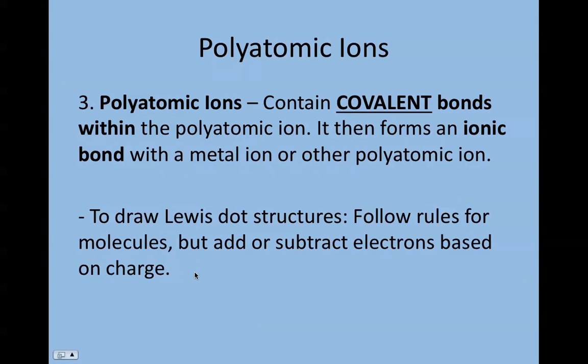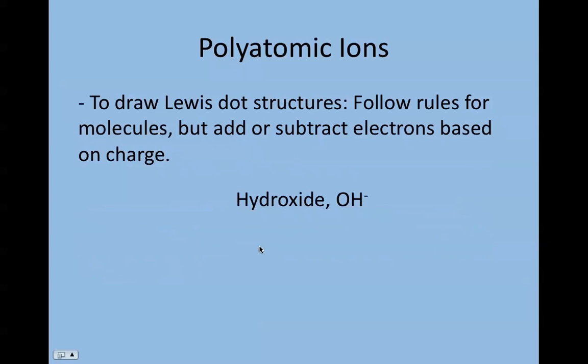We also need to draw polyatomic ions. Remember, polyatomic ions contain covalent bonds within them. The only difference is that polyatomic ions have a charge, so based on the charge, we have to add or subtract electrons. Hydroxide, OH with a negative one charge: oxygen is six, hydrogen is one, and the negative one charge means an extra electron, totaling eight electrons. Oxygen and hydrogen—there's no central atom because there are just two.